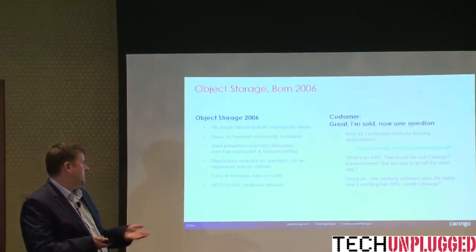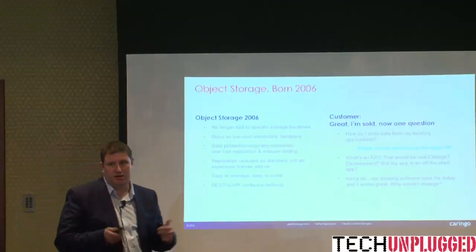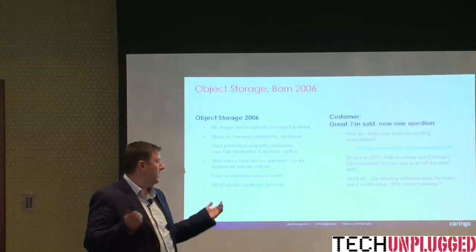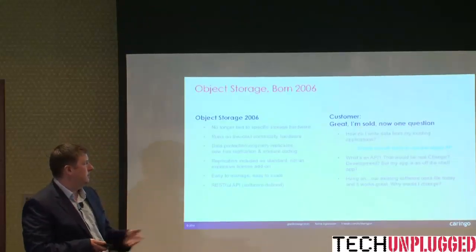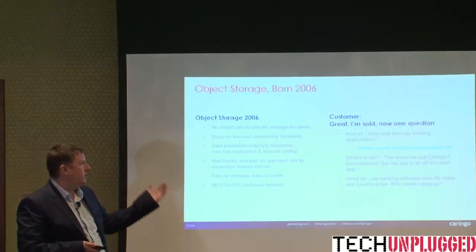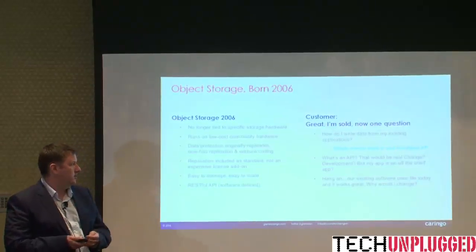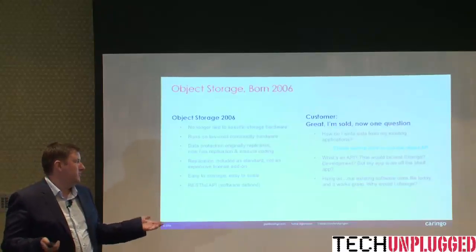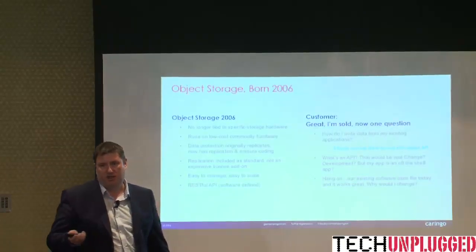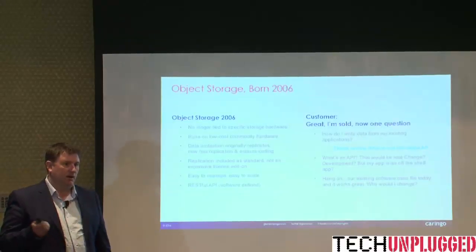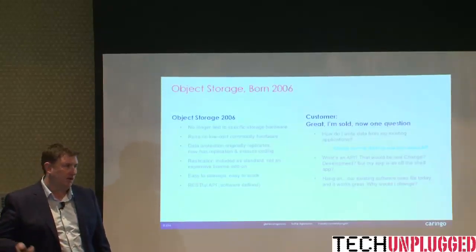Object storage came with a RESTful API. Back in 2006, we'd go to customers and some early adopters understood it — they said they could recode their application to talk directly to the object. But a lot of them said, how do I write data from my existing applications? We said, just rewrite them to use the object API. And they said: that means development, that means cost, and my applications already work today, or they're off-the-shelf. My software vendor doesn't even believe object storage is going to take over. So what do we do?